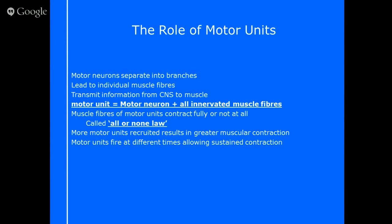We're getting contraction from a motor unit, which all comes from our motor neuron and the fibres that it innervates. It's important to know that with electricity, you can either turn it on or turn it off — you can't have half measures. It's exactly the same for your nerves in your body. A motor unit can either be on or it can be off, with nothing in between. This means you can either activate all of those muscle fibres that the motor neuron is attaching itself to, or none of them. We call that the all-or-none law — muscle fibres contract fully or not at all.